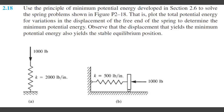Alright, so what's going on y'all? Another principle of minimum potential energy problem. I'm going to do A and B in this video. We have to plot the total potential energy for variations in displacement of the free end of the spring, which will determine the minimum potential energy. When you apply a force, it moves a distance and stays there — that's the minimum potential energy with that force. In this specific scenario, these two forces are a thousand pounds. We also have to observe that displacement yields the minimum potential energy. Let's go ahead and get started.